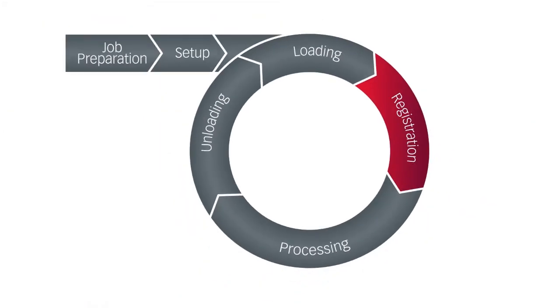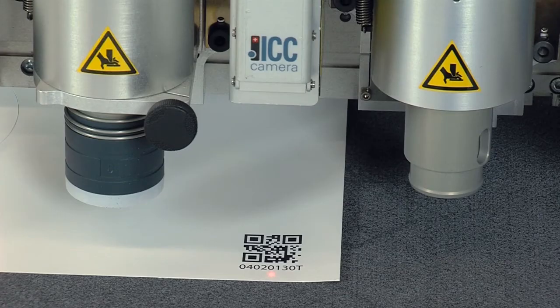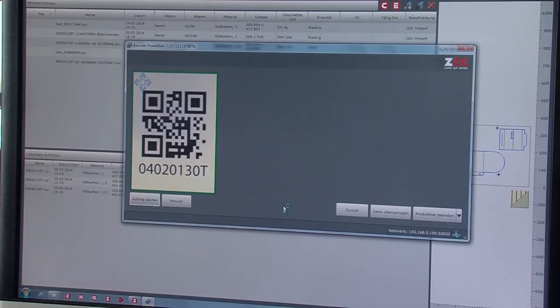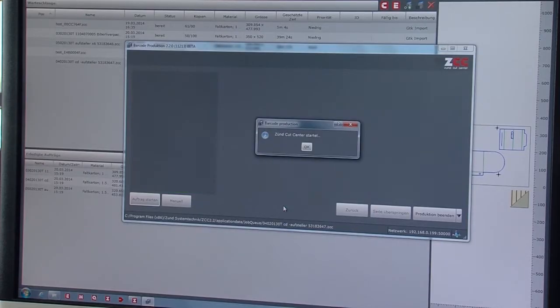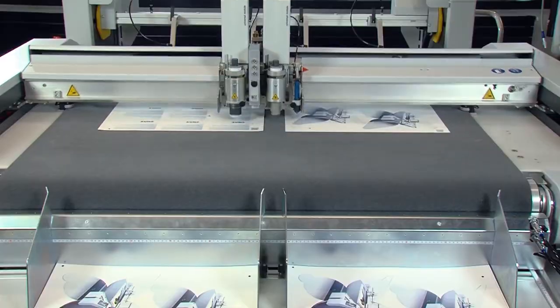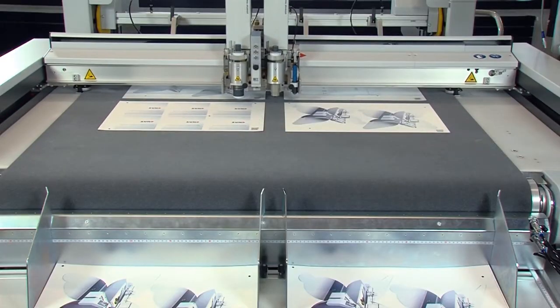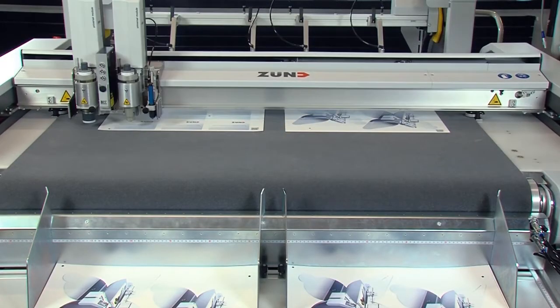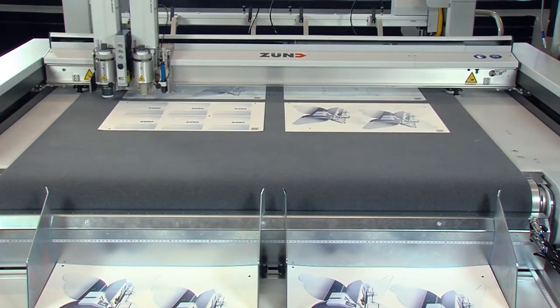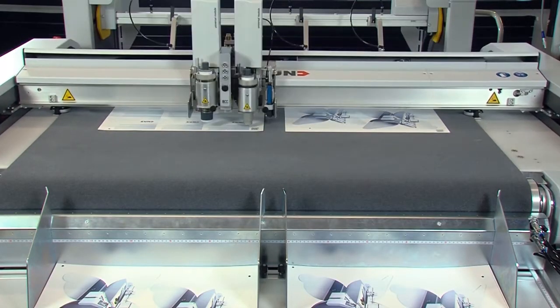The ICC camera automatically identifies and retrieves the correct cut files by capturing QR codes. Processing begins automatically, requiring no further operator intervention.